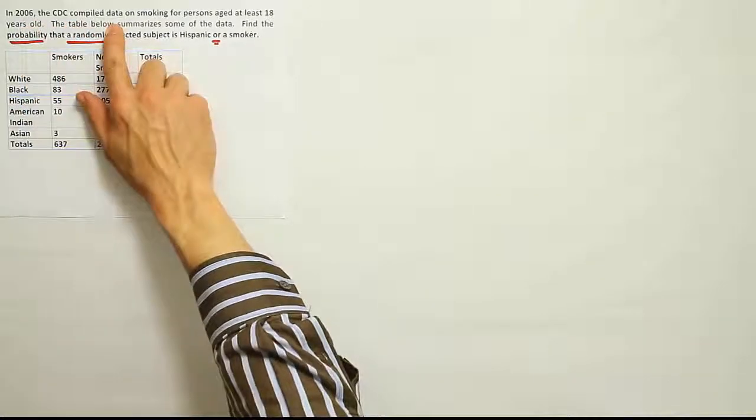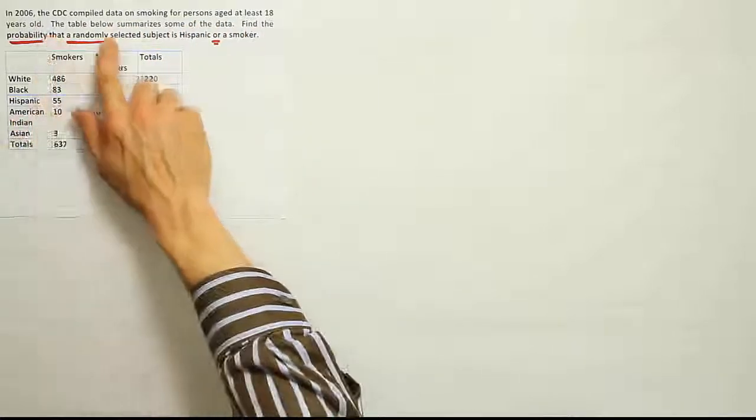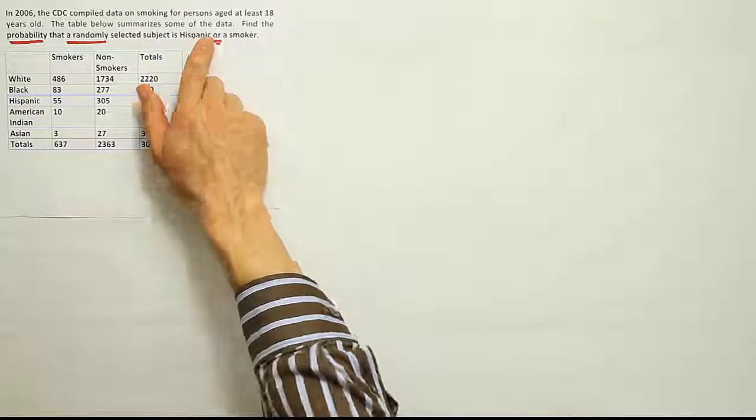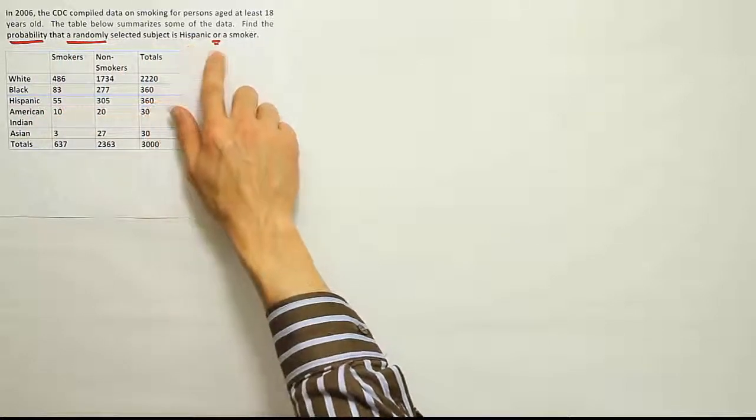In 2006, the CDC compiled data on smoking for persons aged at least 18 years old. The table below summarizes some of the data. Find the probability that a randomly selected subject is Hispanic or a smoker.